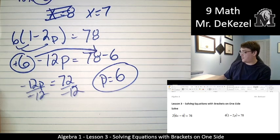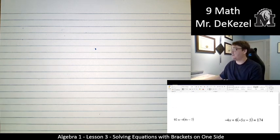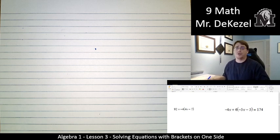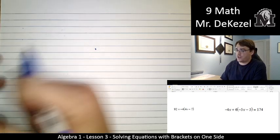So when we have brackets on one side, we get rid of them by using the distributive property. And then we proceed forward to combine like terms, move numbers across the equal sign so that we can isolate the variable. Solving is isolating.